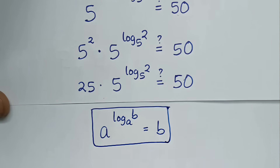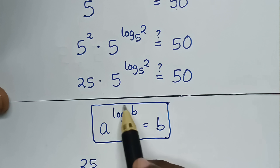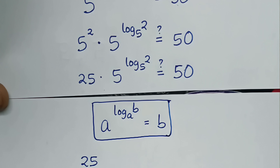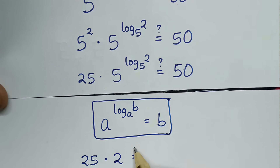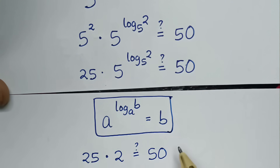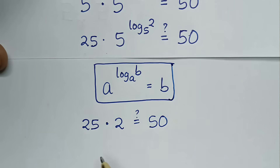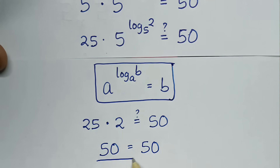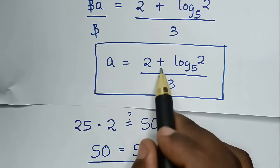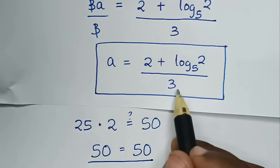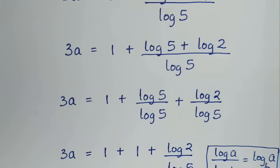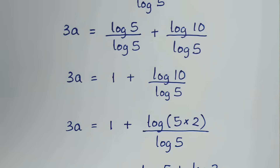So 5 power 2 times 2 equals 25 times 2, which is 50, and equals 50. So the left side and right side are equal, confirming it is true. The value of a is 2 plus log of 2 base 5, all over 3, which is the simplest form. Thank you, don't forget to subscribe to my channel, and see you in the next video, bye bye.